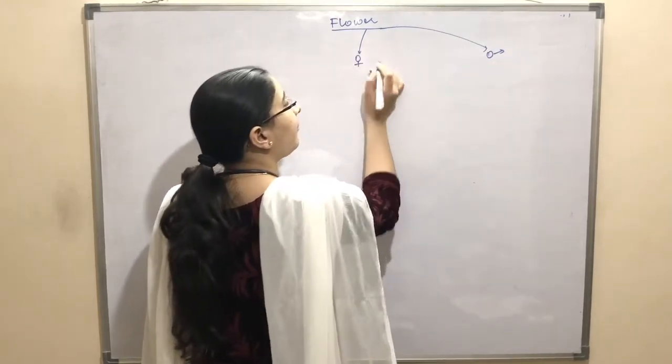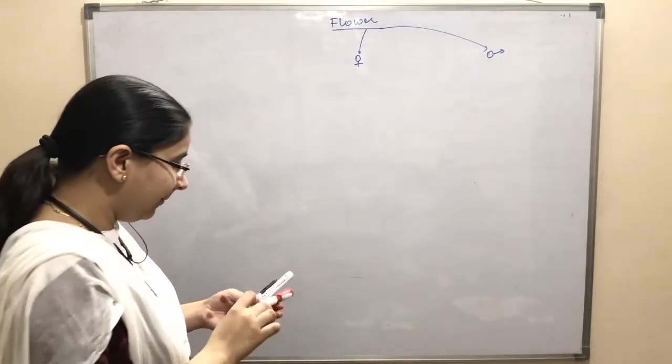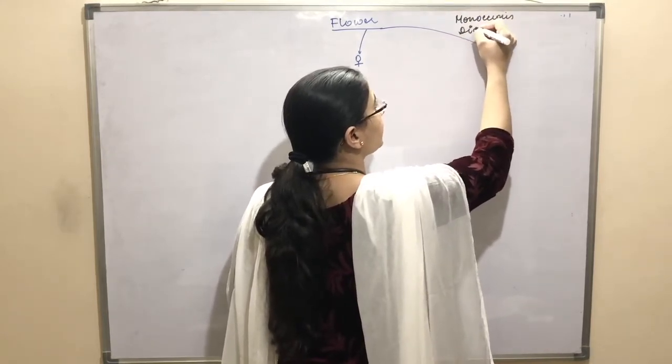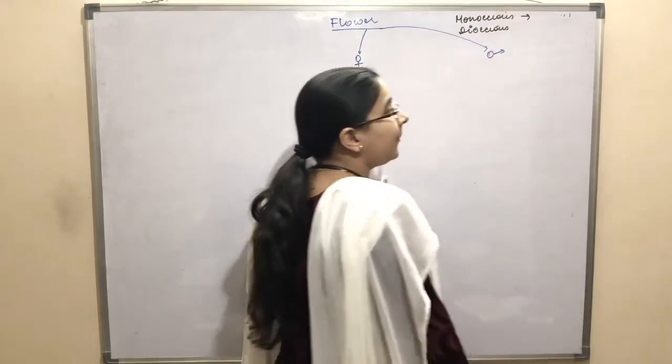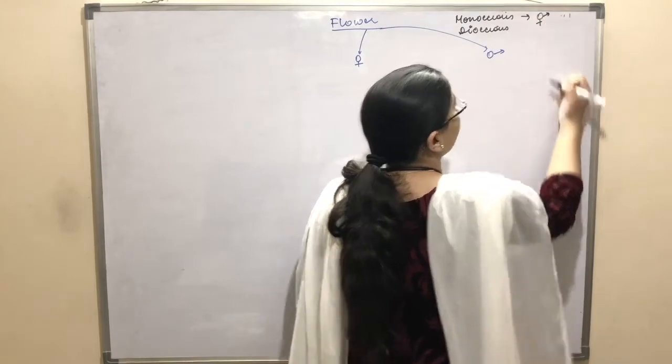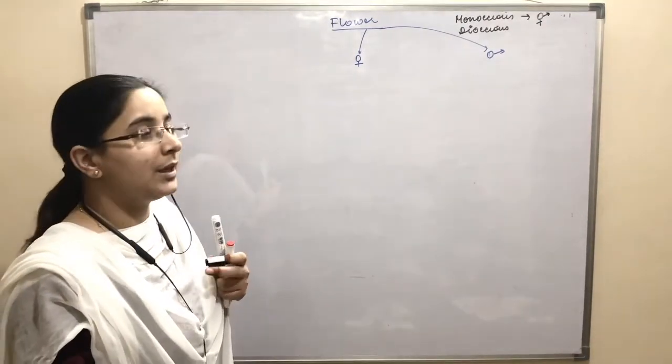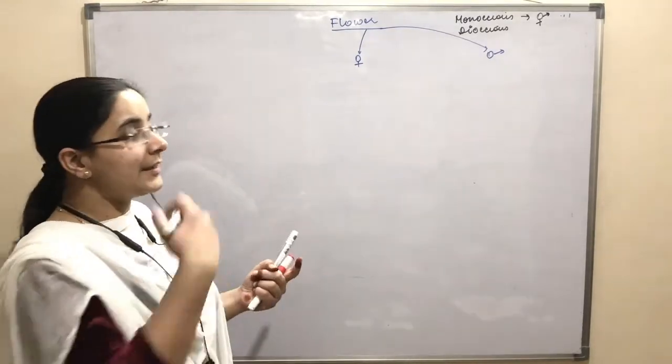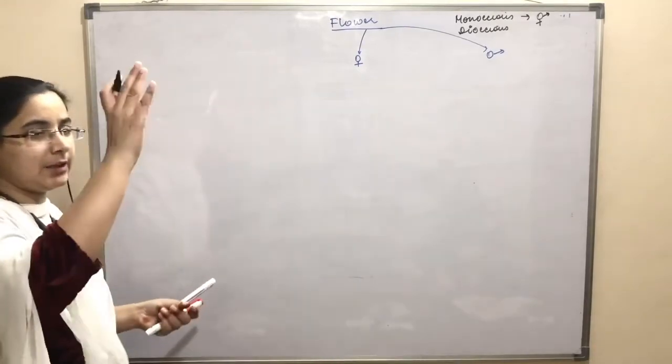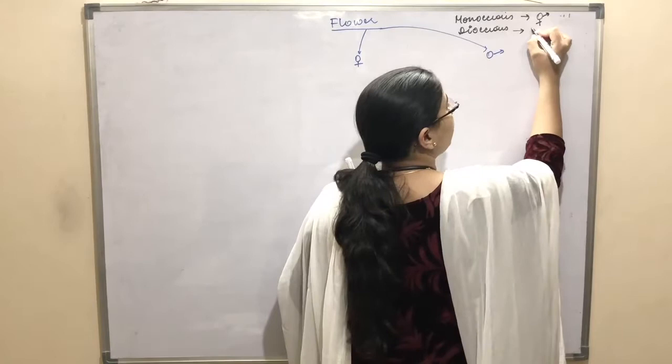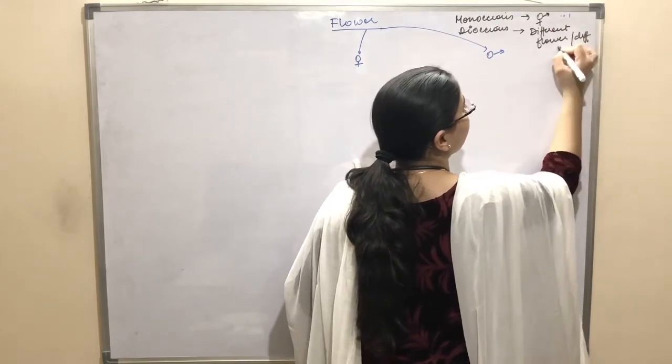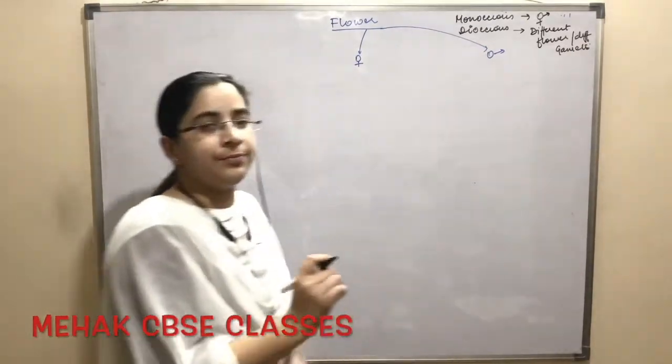Here come two important terms for you. First is monoecious and second is dioecious. Monoecious is a condition where the male and the female reproductive part of the flower is present in the same flower. Dioecious means different flowers will be having different genders - that means unisexual.